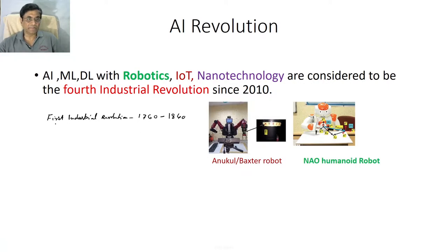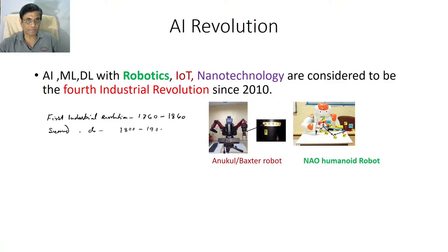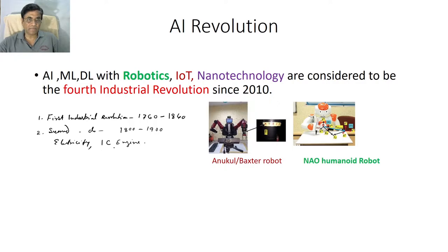Then the second industrial revolution started from the 19th century into the 20th century. It was marked by the discovery of electricity. So this industrial revolution was driven by electricity and the internal combustion engine.